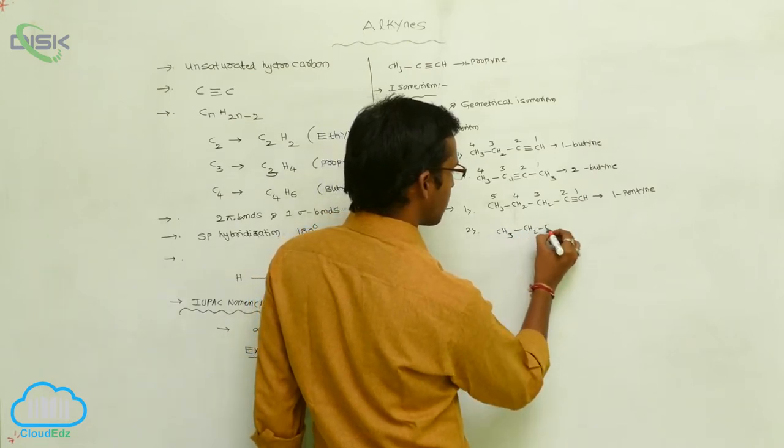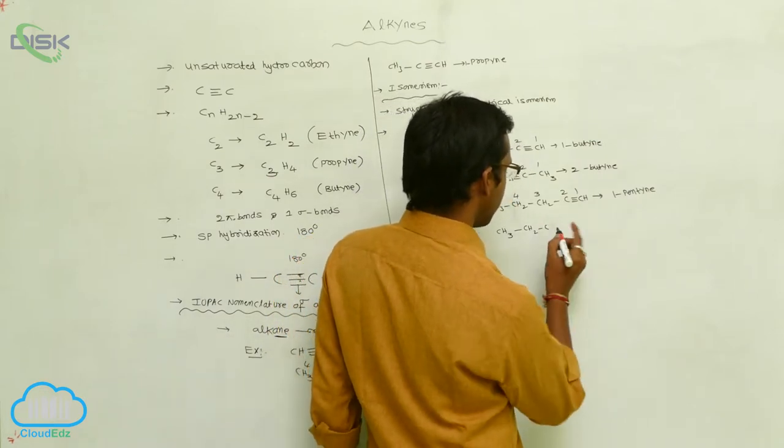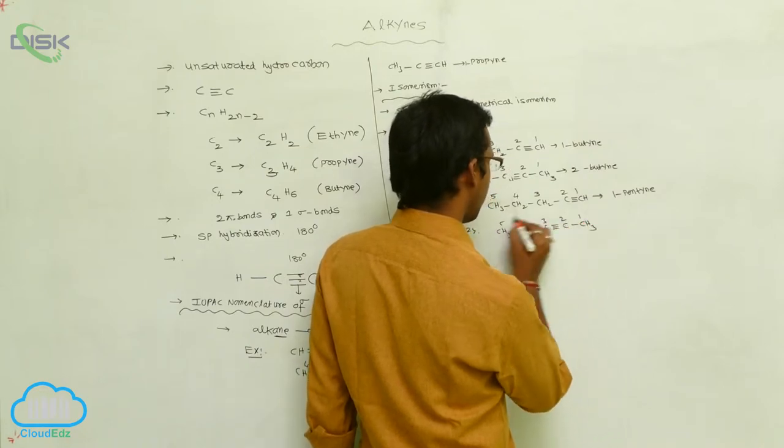So CH3-CH2-CH2 or CH - so when you are represented with a triple bond, CH3: 1, 2, 3, 4, 5.